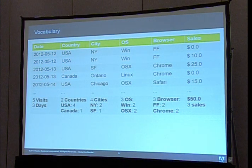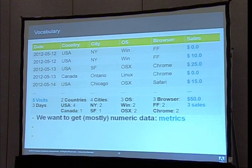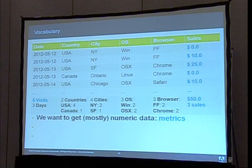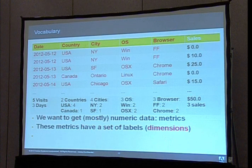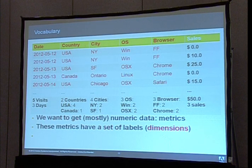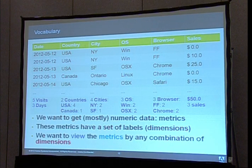I'm going to move really fast through this vocabulary since these terms will come up over and over again during my presentation. Basically, we have a set of input data like web analytics files or sales events. You can split this data into two big parts: numeric data, which are metrics or measures like sales or number of visits, and metadata or labels called dimensions. These characterize our data and put it into one bucket or another. Time is a dimension, or any other metadata your events can contain. What you want to do is answer questions that boil down to viewing the metrics by any combination of dimensions.